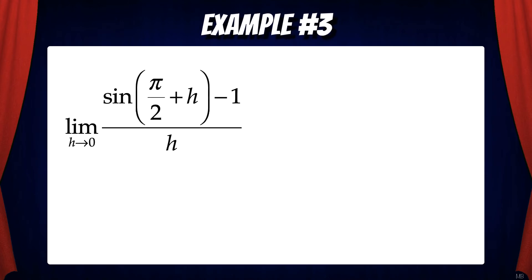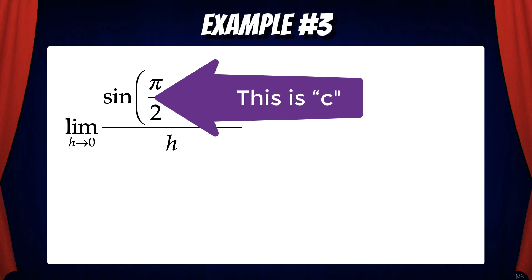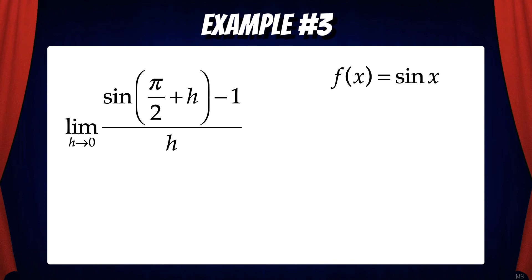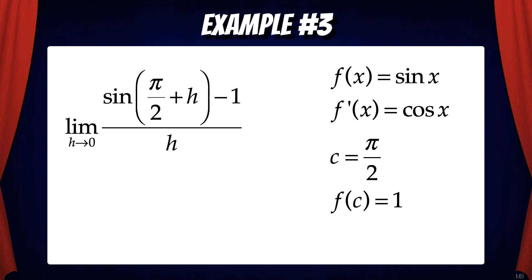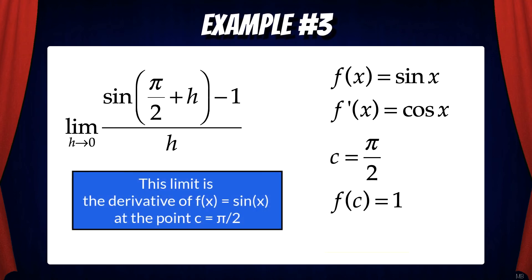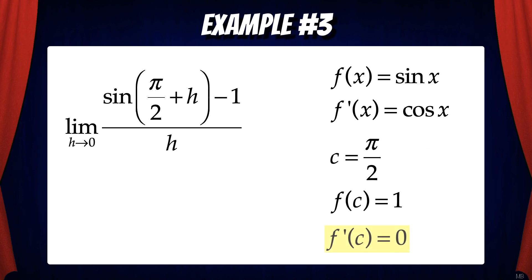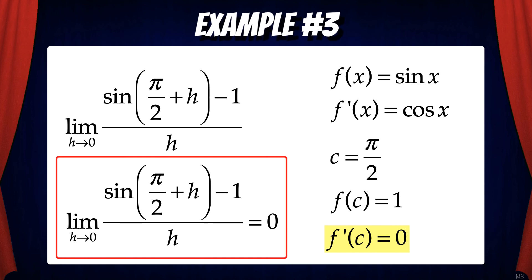Here's another example. We have the limit as h goes to zero of sine of pi over two plus h minus one over h. Now, since we have a one at the end, that's a big clue that a c has been plugged in to the formal definition of a derivative. What's the c? Well, instead of x plus h, we have pi over two plus h, so c equals pi over two. So let's extract the pieces: f of x equals sine x, the derivative of sine is cosine, c equals pi over two, and f of c equals one. This limit means the derivative of sine at the point c equals pi over two. So we plug pi over two into cosine, and we get cosine of pi over two, which is zero. That means the entire limit is zero.